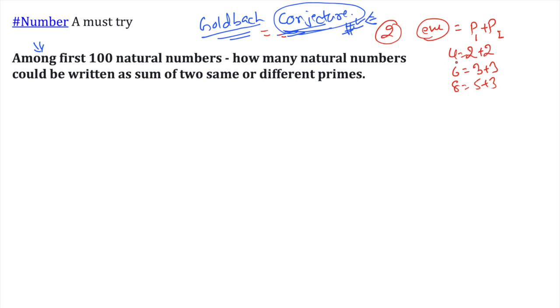Among 100 natural numbers, how many even numbers do we have? We have 50 even numbers, but 49 apart from 2. All the 49 even numbers could be written as sum of 2 primes. The primes could be same or different, so we have 49 as one case.